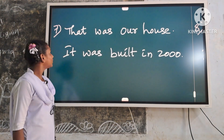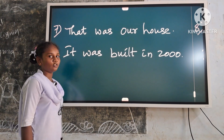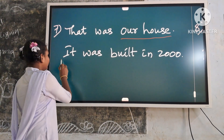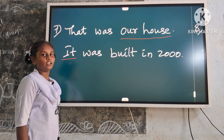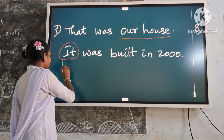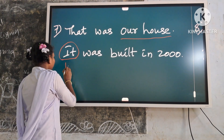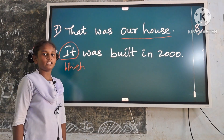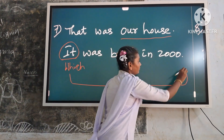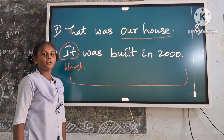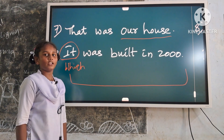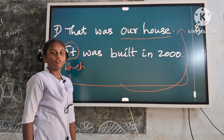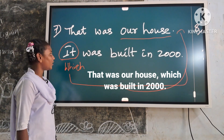Now seventh example: That was our house. It was built in 2000. Here the noun phrase is 'our house.' Related pronoun: it. Round off the related pronoun in the second sentence. Replace it with which. Keep the entire second sentence in the bracket. Keep the entire second sentence beside the first identified noun phrase of things. Now the answer is ready: That was our house which was built in 2000.